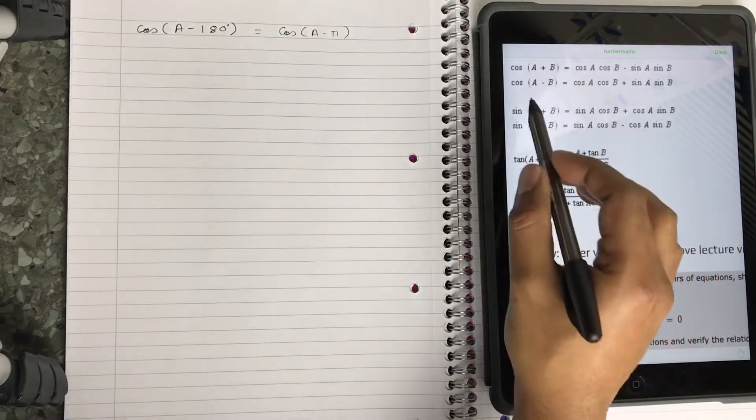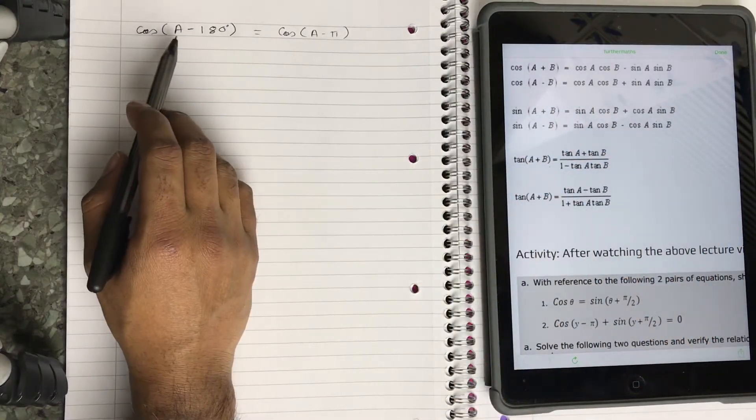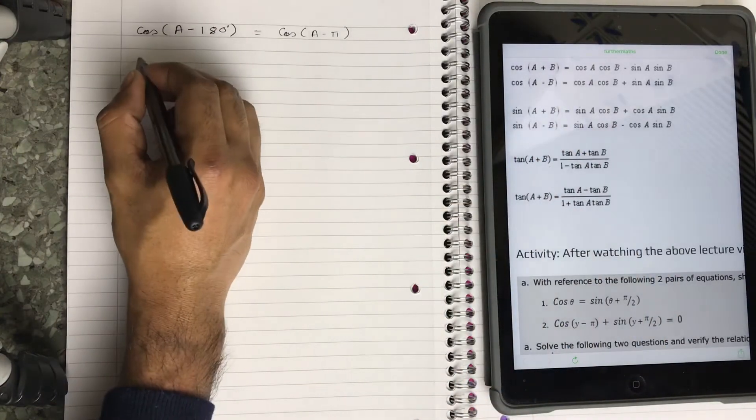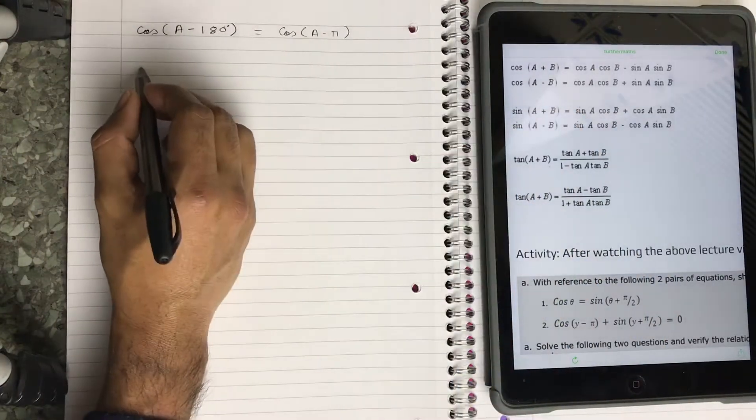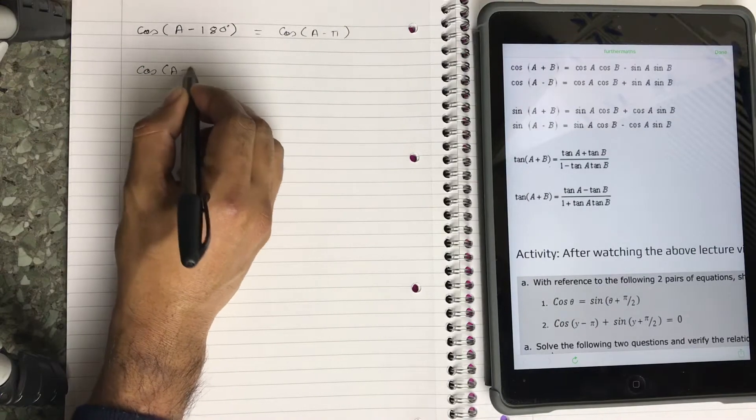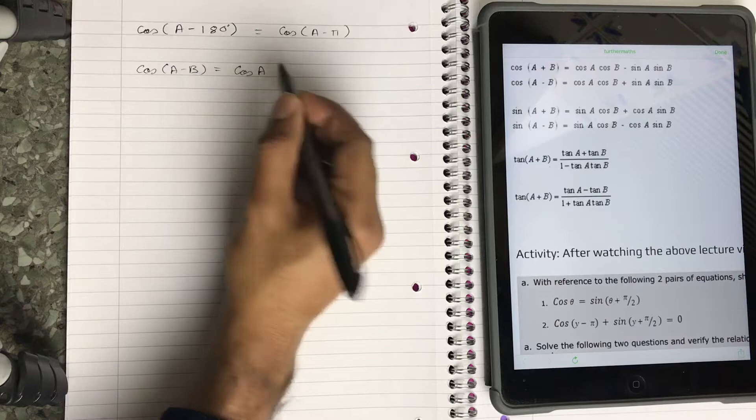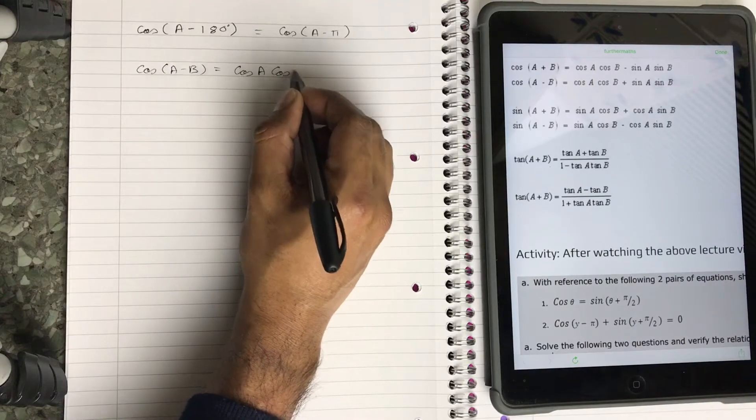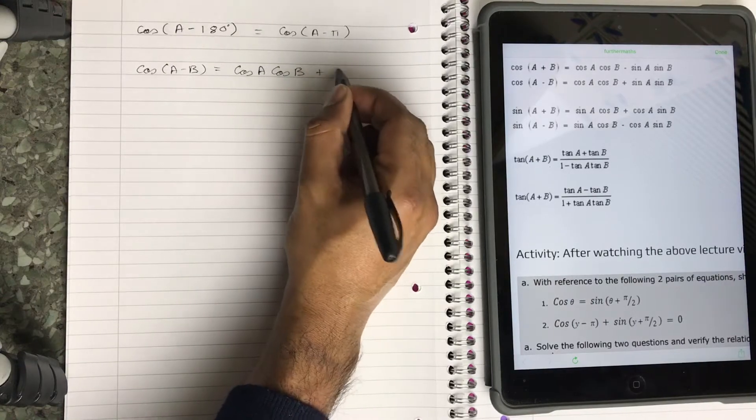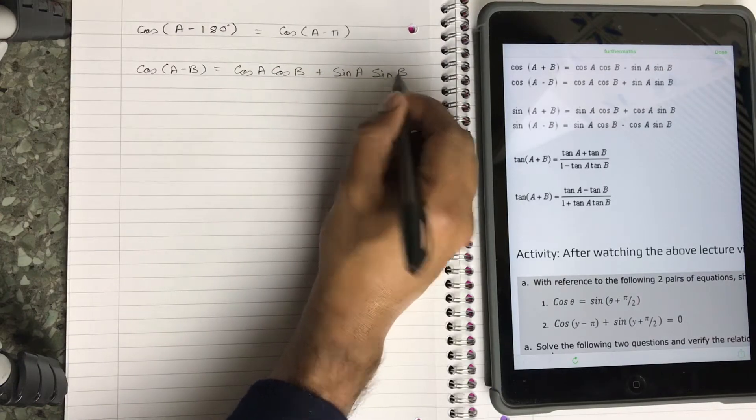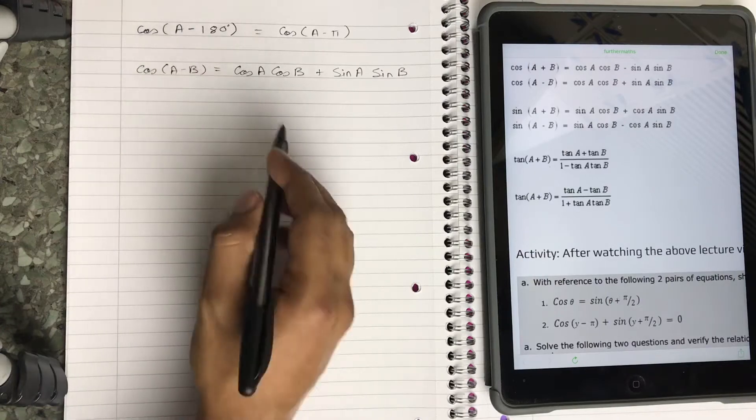I've got cos(A + B) and cos(A - B). This over here is very similar to cos(A - B), so I'm going to repeat my formula here: cos(A - B) equals cos(A)cos(B) + sin(A)sin(B).